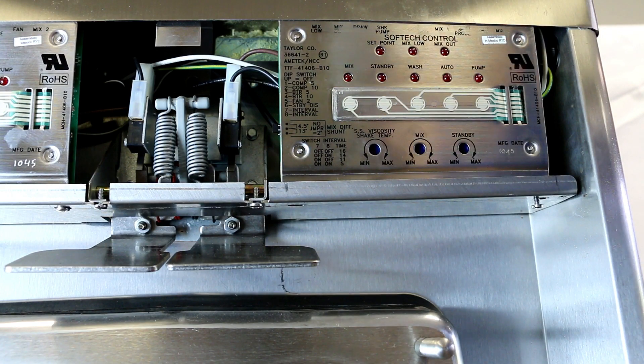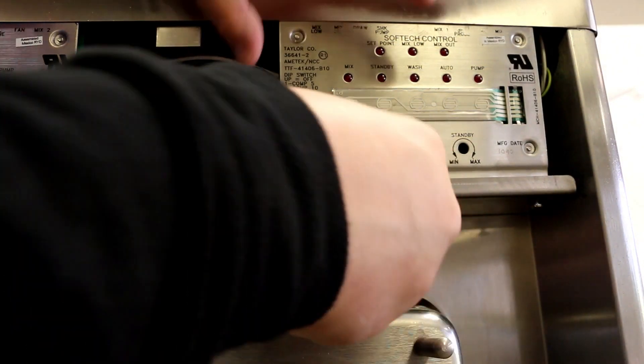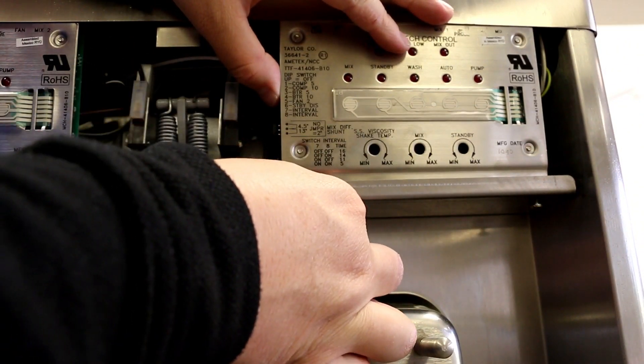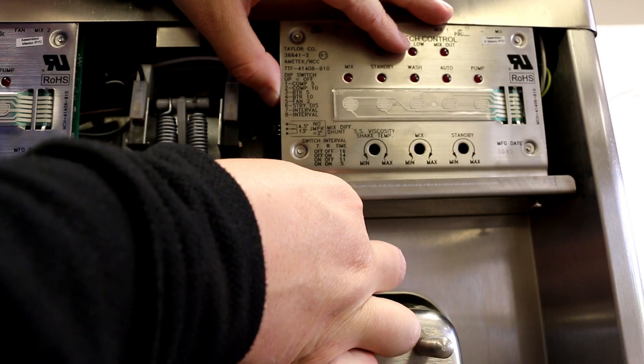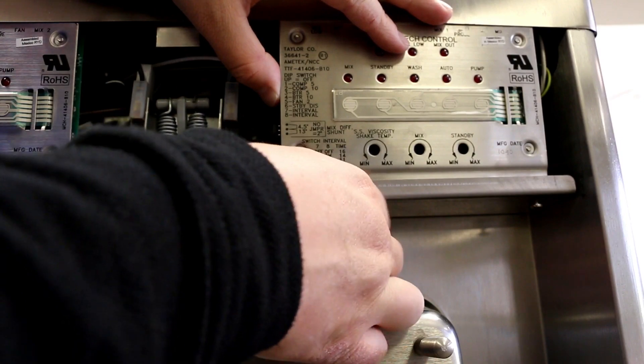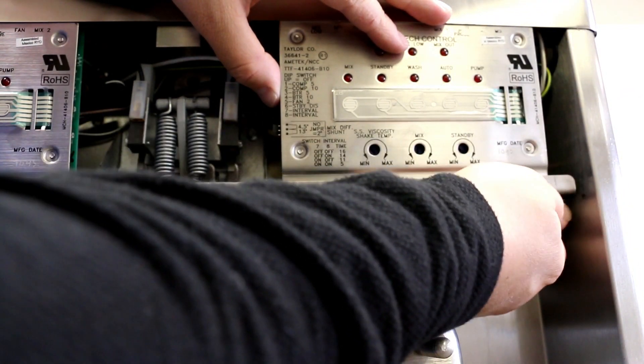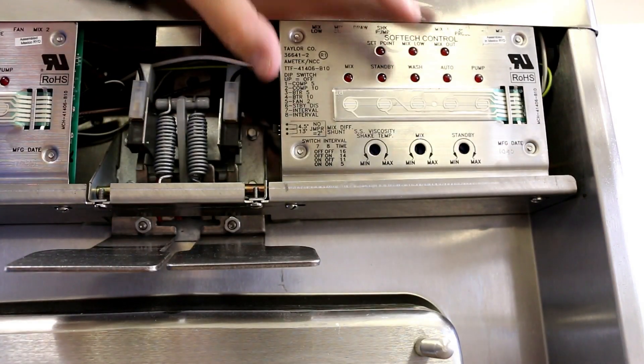There's a link to the universal barrel probe we use in this video at our website www.softserveparts.com. I'll stick a link in the description for this video but you can find any parts for these Taylor machines like the one in this video at www.softserveparts.com. Over 30 years supplying parts and supplies for Taylor machines.